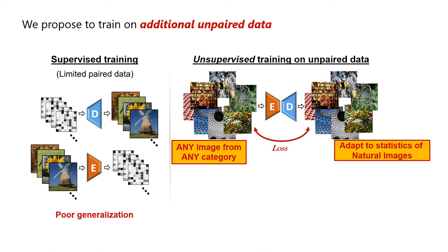In our case, we used an additional 50,000 natural images from 1,000 rich ImageNet classes. Importantly, this introduces adaptation to the statistics of natural images and their semantic classes.